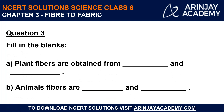Question three: Fill in the blanks. Plant fibers — examples include cotton, obtained from cotton plants. Animal fibers — examples include wool and silk. There may be other correct answers as well, as these are common examples we can use to fill in the blanks.